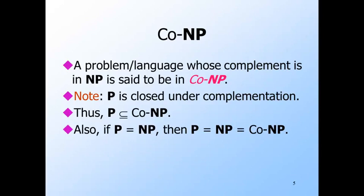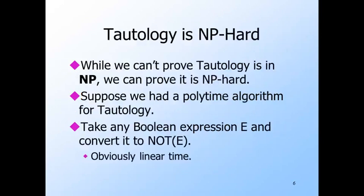However, it is possible, but unlikely, that NP and co-NP are the same, but that they are bigger than P. We can prove the tautology problem to be NP-hard. For the proof, suppose there is a polytime algorithm for the tautology problem. Then, given a Boolean expression E, convert it to not-E, which takes only linear time, since all we have to do is add 'not' and a pair of parentheses.